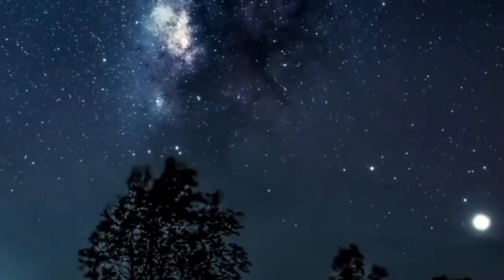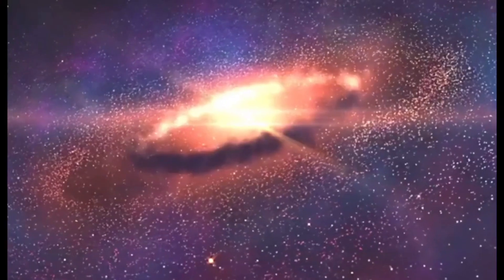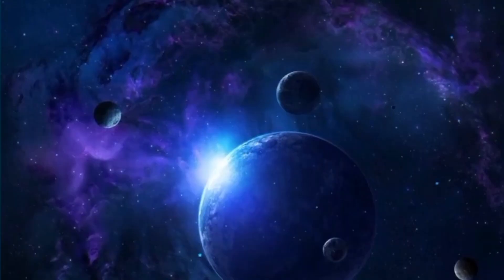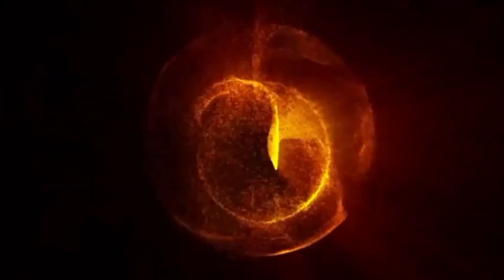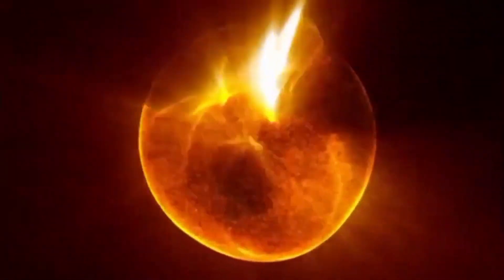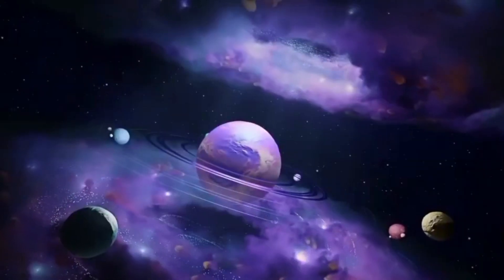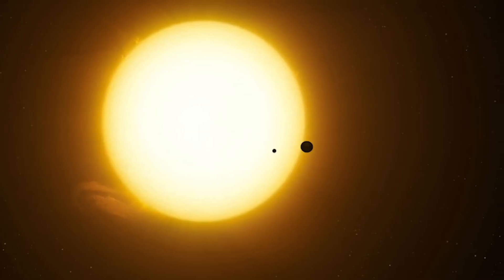Larger stars often burn through their hydrogen fuel more quickly, leading to their eventual demise, even if they are just roughly 10 million years old. Unquestionably, Betelgeuse is in its latter stages of existence. However, at over 5 billion years old, our sun is still going strong.